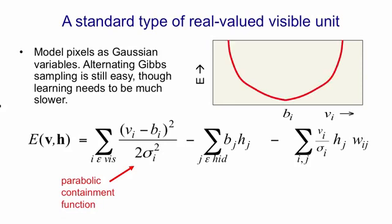It's a parabola with its minimum of the bias of the i-th unit. And as the i-th unit departs from that value, we add energy quadratically. So that tries to keep the i-th visible unit close to bi.